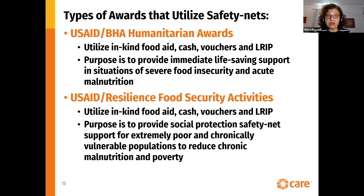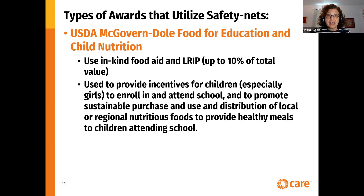RFSA programs continue to focus on this over time but also help with graduation from safety nets as time moves on. They may also provide inputs via cash or vouchers. The USDA McGovern-Dole Food for Education Child Nutrition programs mainly use in-kind food aid, but up to 10% of the total value of the programs may be used for local, regional, and international procurement. The food is used to provide incentives for children — especially girls — to enroll in and attend school, and to promote sustainable purchase and distribution of local, nutritious foods to provide healthy meals to children attending schools.